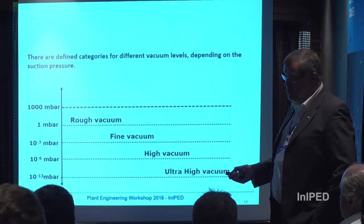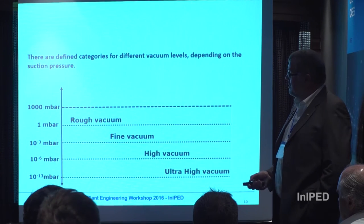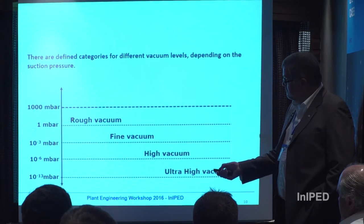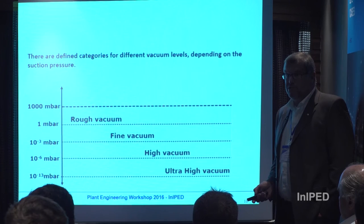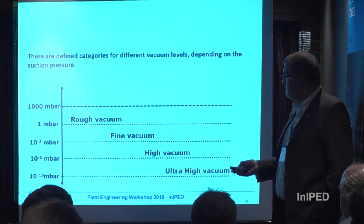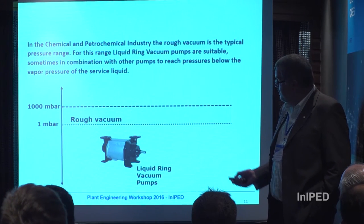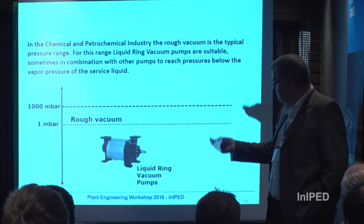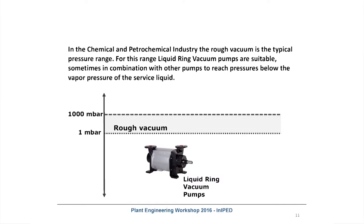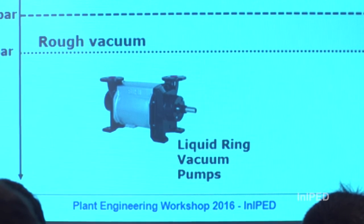On the vacuum side, we have different defined steps of vacuum. There is the rough vacuum, which starts at one millibar absolute up to ambient pressure. Fine vacuum goes down to ten minus three millibar, high vacuum to ten minus six, and ultra-high vacuum down to ten minus thirteen bar. For applications in chemistry and petrochemistry, we are normally in the range between one millibar and atmospheric pressure — and this is the range where liquid ring machines operate. For lower pressures, liquid ring machines are not suitable, because you can only decrease pressure down to slightly above the evaporation pressure of the service liquid; otherwise the pump fills with steam and cannot operate anymore.